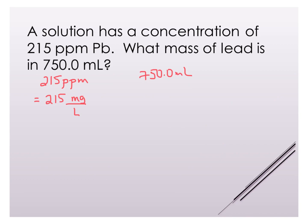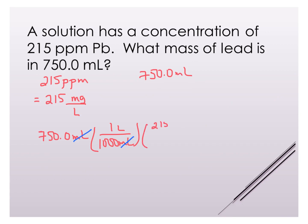Now it's much easier to see that we start with 750 milliliters, since it's the only number with one unit. We convert milliliters to liters by dividing by 1000 — milliliters cancel, leaving liters. Then we apply the concentration: 215 milligrams per liter. Liters cancel with liters, leaving milligrams of lead. Since no particular unit is specified, we leave it in milligrams. So 750 times 215 divided by 1000 gives us 161 milligrams of lead.